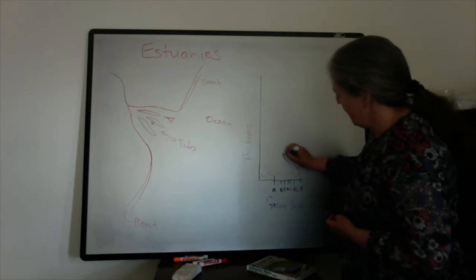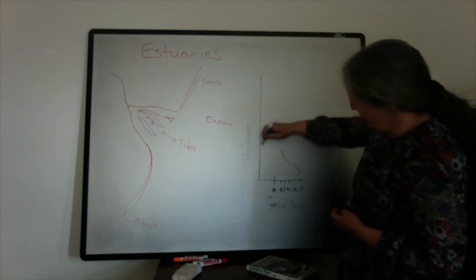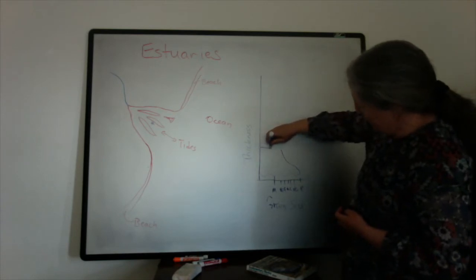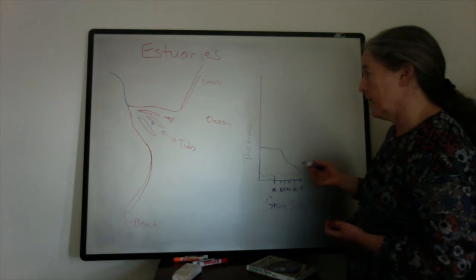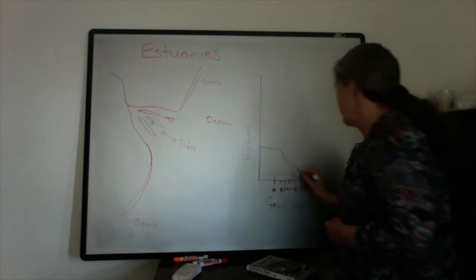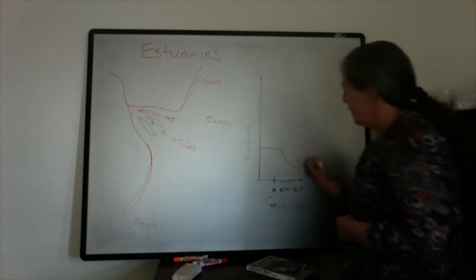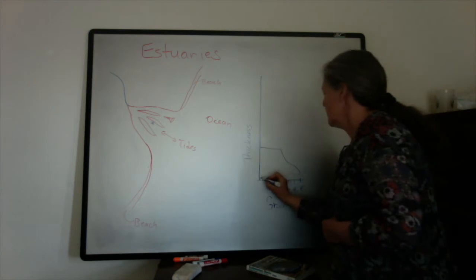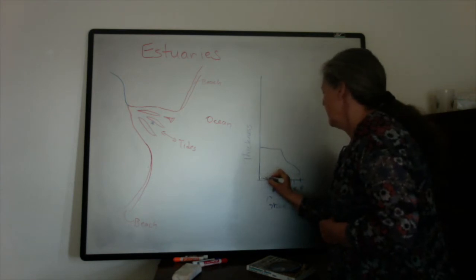And then we have it fining up, representing the migration of a point bar in a meandering river. This shows the grain size change, and we have our mud here.